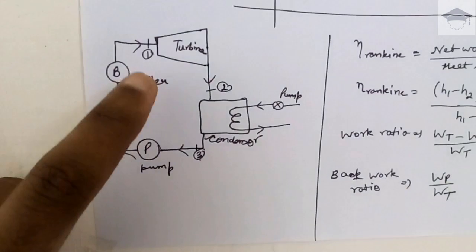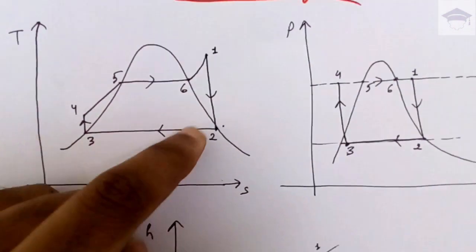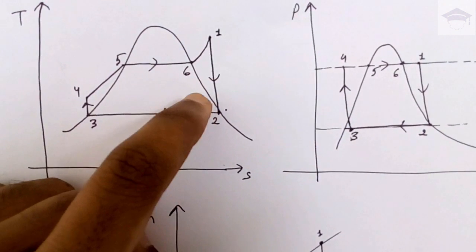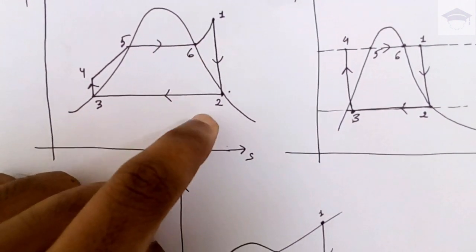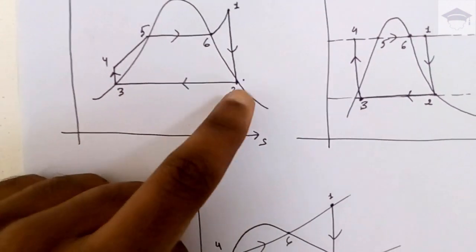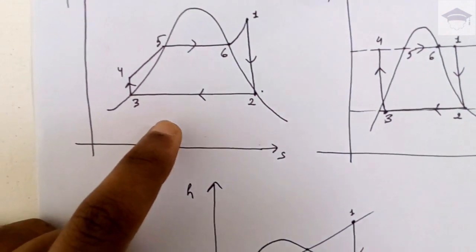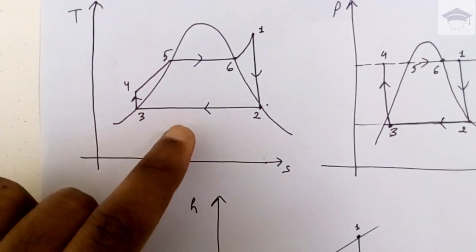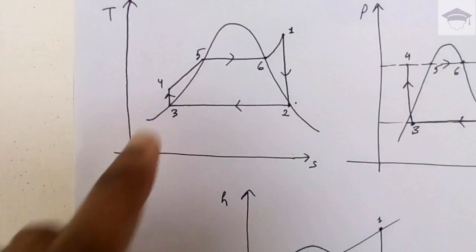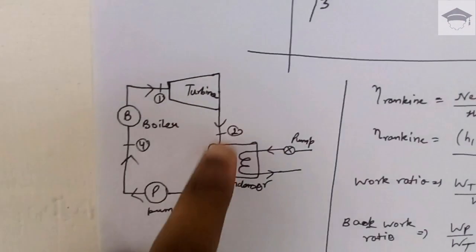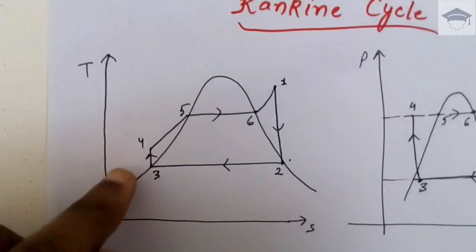From two to three, the heat is rejected at constant temperature and constant pressure in the condenser. From three to four, the pump does work — we have to supply some external work in the pump to pump the water from three to four.